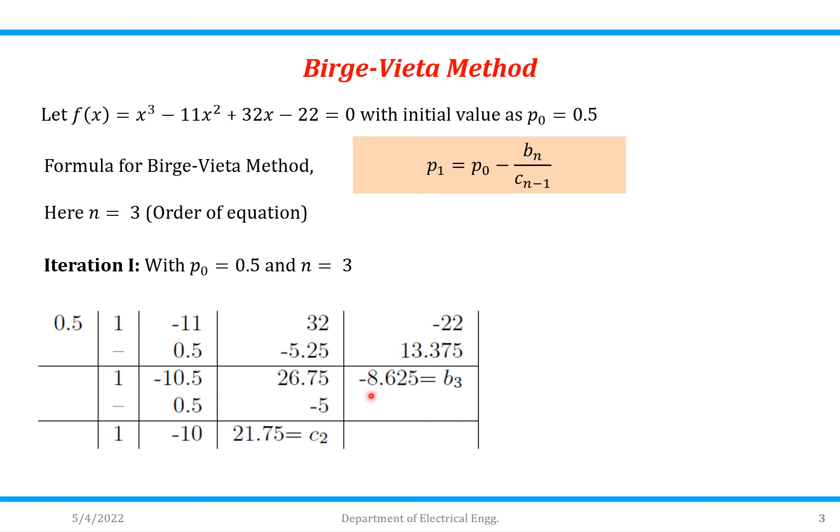So by doing addition the answer will be -8.625, that is the value of b₃. This is what is synthetic division for the first time.